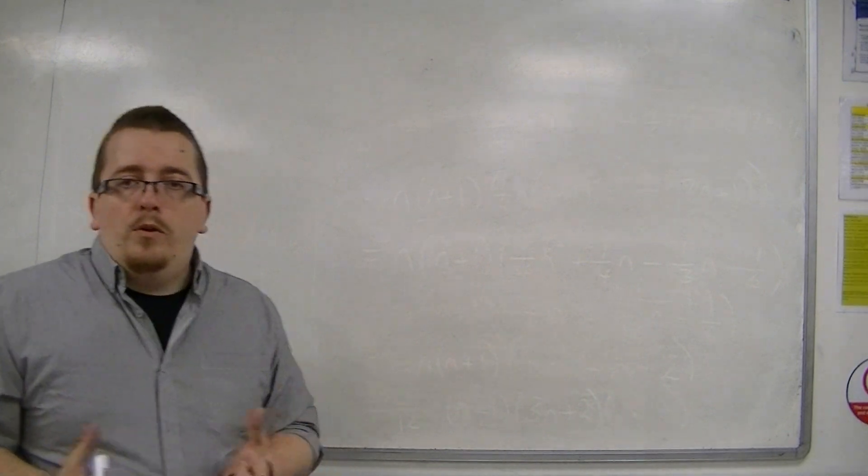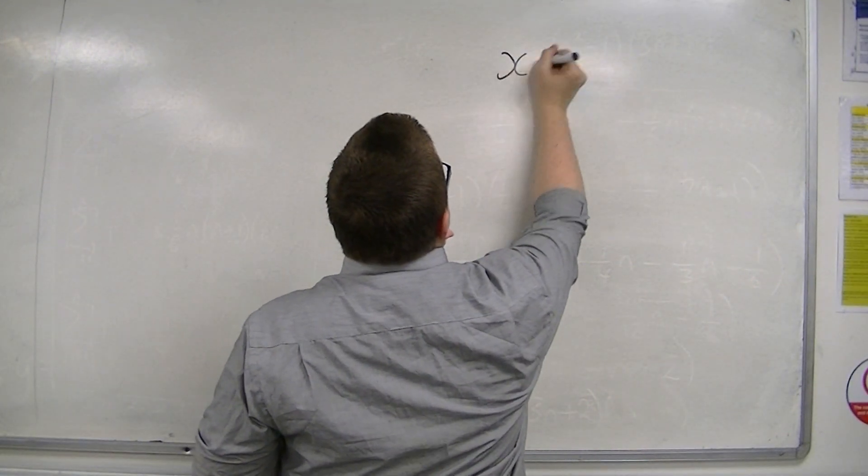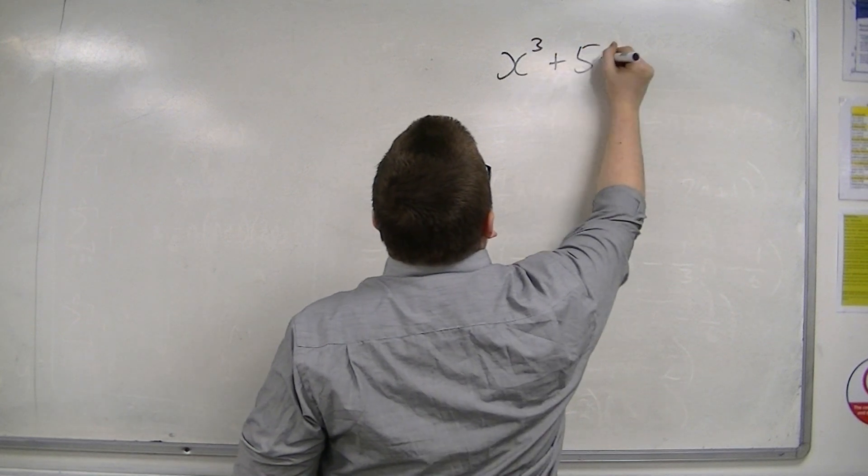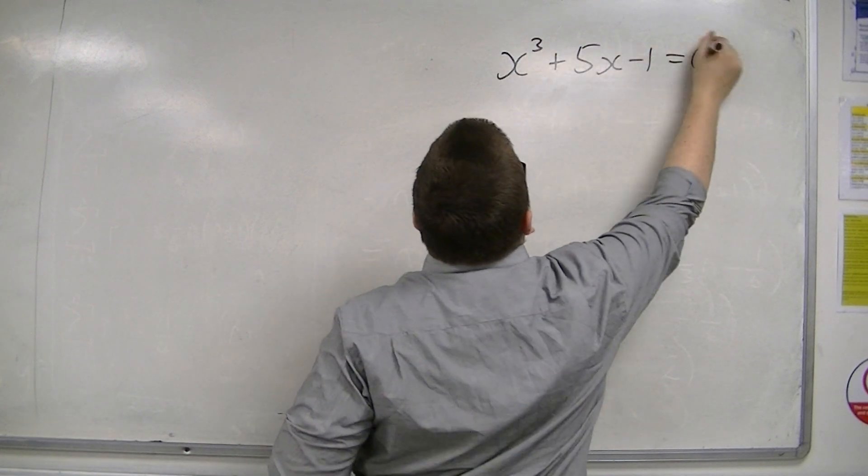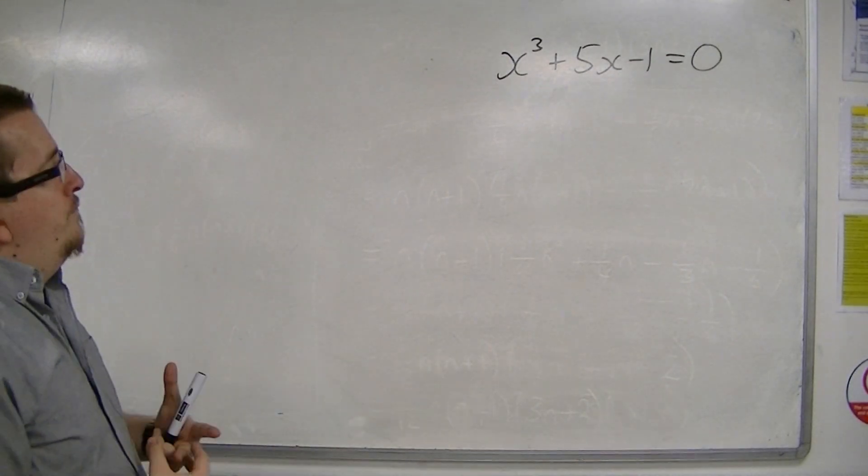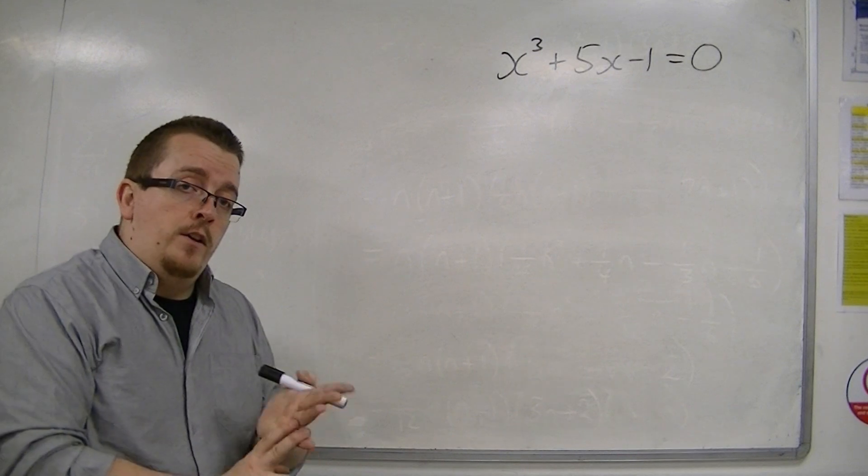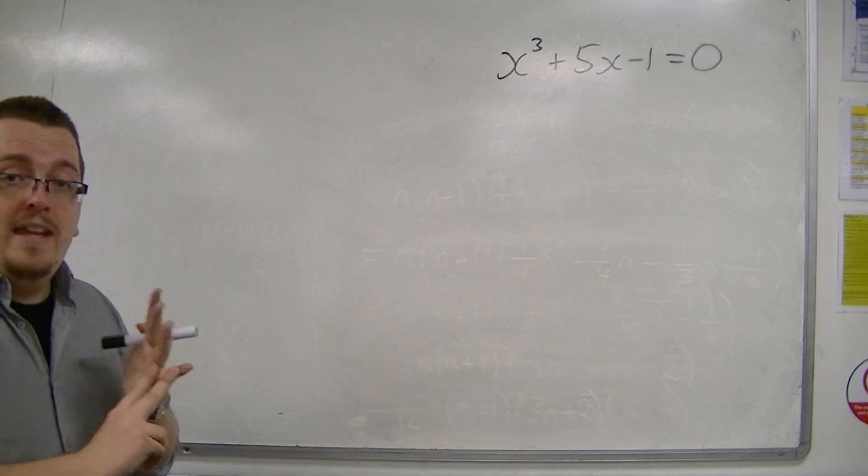So if I said x cubed plus 5x minus 1 equals 0, and I was asked to solve that problem, I would have difficulty. The problem is that it's a cubic. I don't know the cubic formula off the top of my head, and I don't know anyone that does.